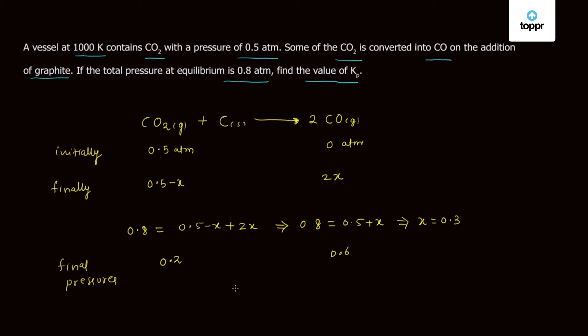We know Kp, that is equilibrium constant, is given as the partial pressure of CO squared divided by the partial pressure of CO2.